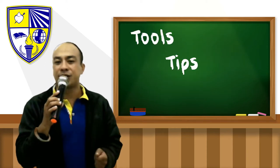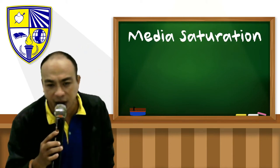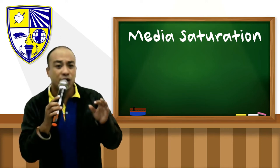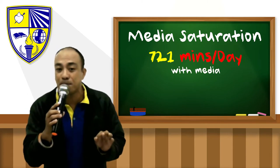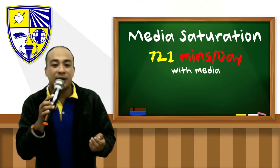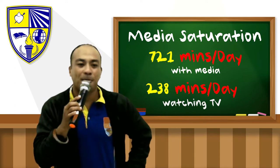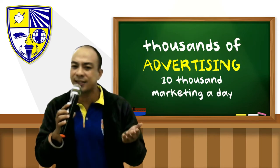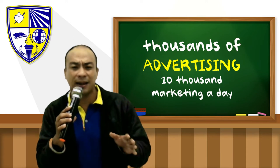Here is the age of media saturation. We live in an era of media saturation. Here are some statistics that put hard numbers to what most people already instinctively know. The average U.S. citizen spends 721 minutes per day with media. Television remains the primary media outlet, with the average U.S. citizen spending 238 minutes a day watching television. Most experts agree the average person sees thousands of advertising messages a day, and studies have shown that the average person is exposed to 10,000 brand marketing messages a day.